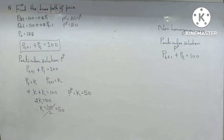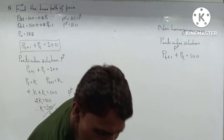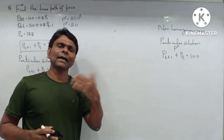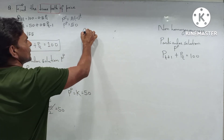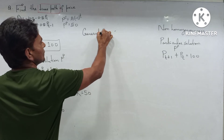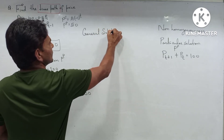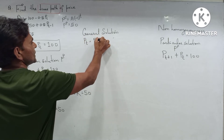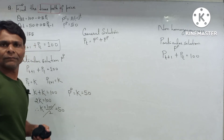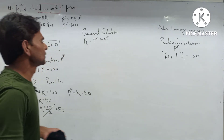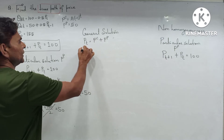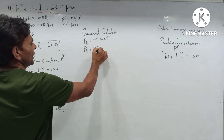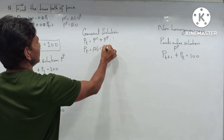Now we are in a position to get the general solution. The general solution is the combination of the complementary function and the particular solution: p(t) = p_c + p_p. Substituting the values already calculated: p(t) = A·(-1)^t + 50.